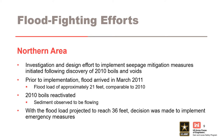Following the discovery of extensive sand boils and voids in 2010, a fast-track geotechnical investigation and design effort for construction of seepage mitigation measures was initiated. In March 2011, before the permanent measure could be designed and built, the Mississippi River rose to 98.95 feet, resulting in a differential loading of 21 feet, comparable to 2010. At this point, the boils discovered in 2010 were reactivated and sediment was observed flowing out of them. With the river projected to rise an additional 15 feet of differential flood load, the decision was made to implement emergency measures to combat foundation seepage.